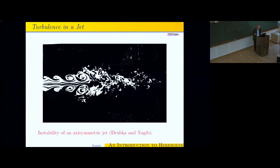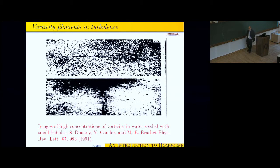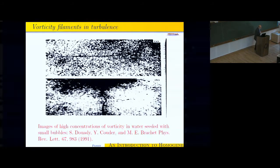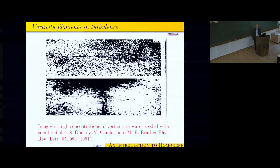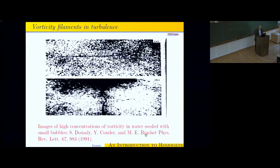Then turbulence in jets. I show you a classic picture of instability of an axisymmetric jet. And then you get vorticity filaments in turbulent flows, and they can often be seen by seeding the flow with small bubbles. And you see this is, I think, a vortex tube, and there's something here too. And it turns out that one of the authors of this paper is in the audience, Marc-Étienne Brachet.